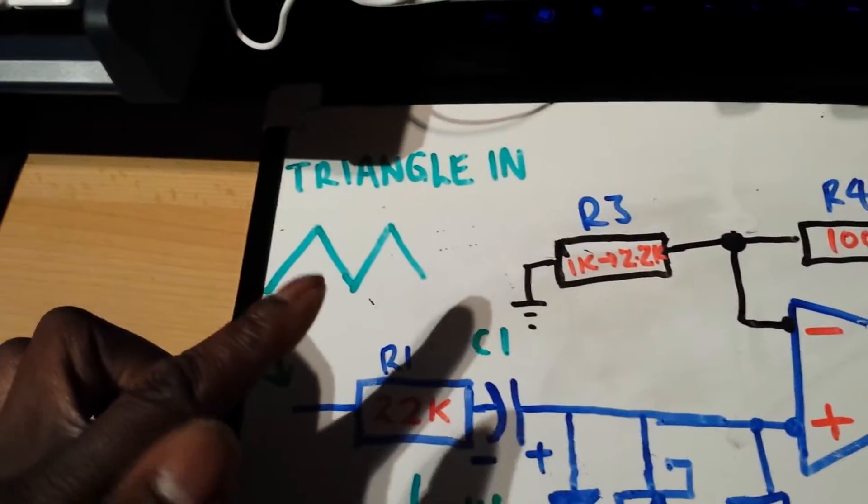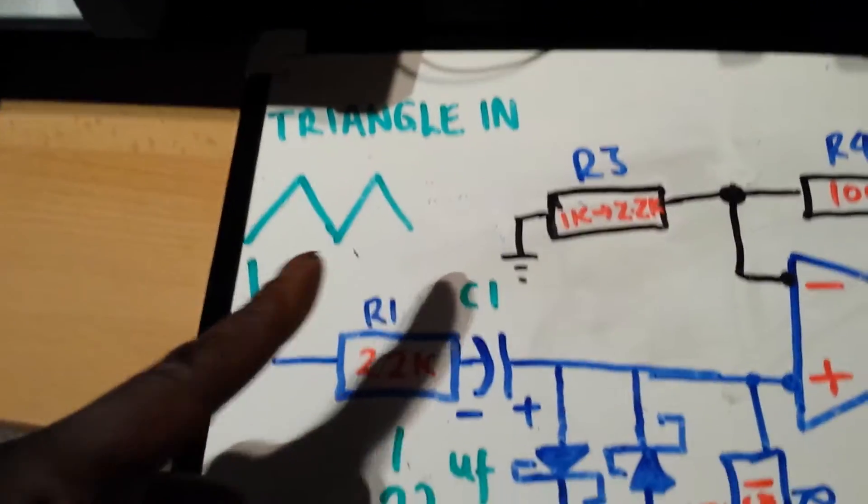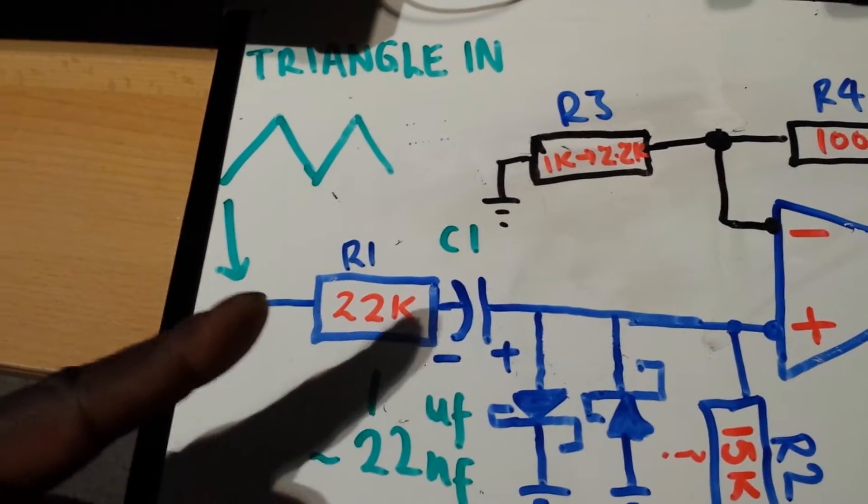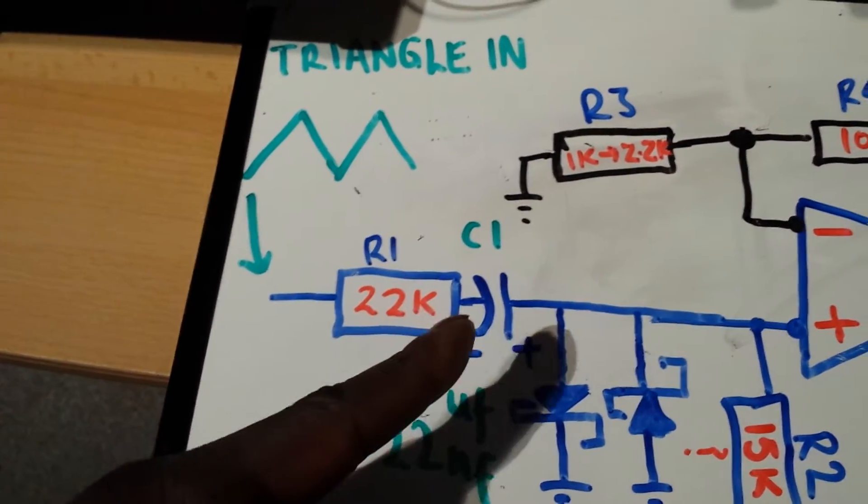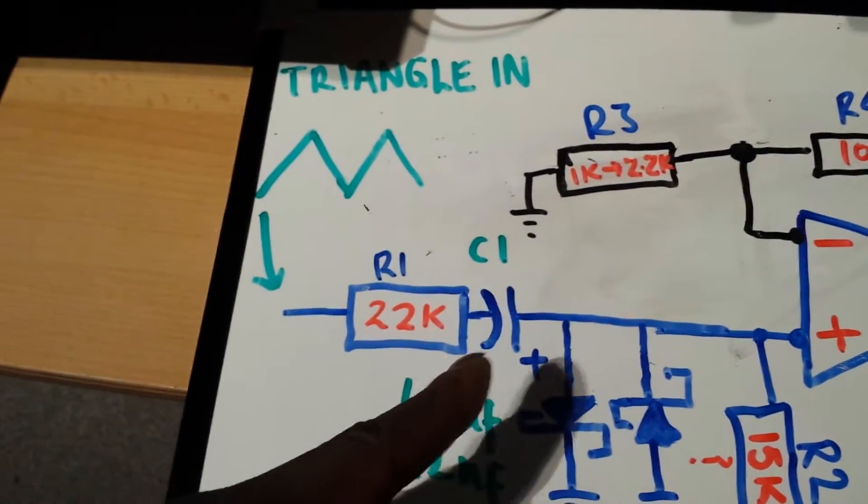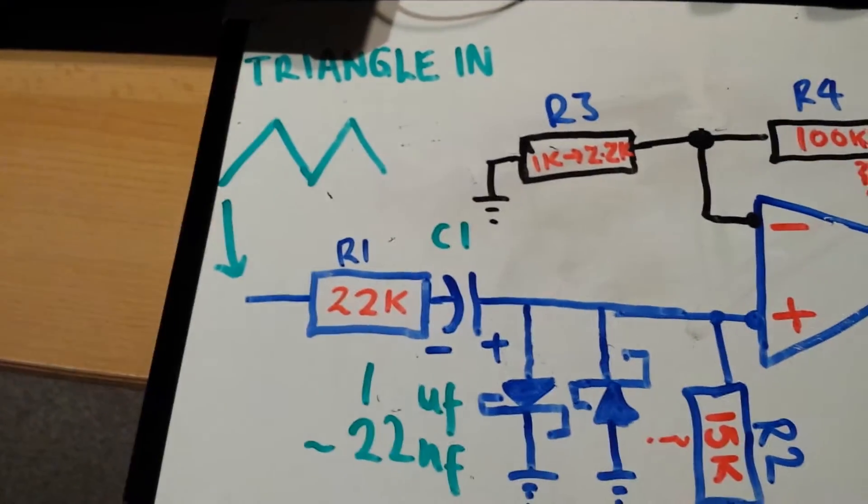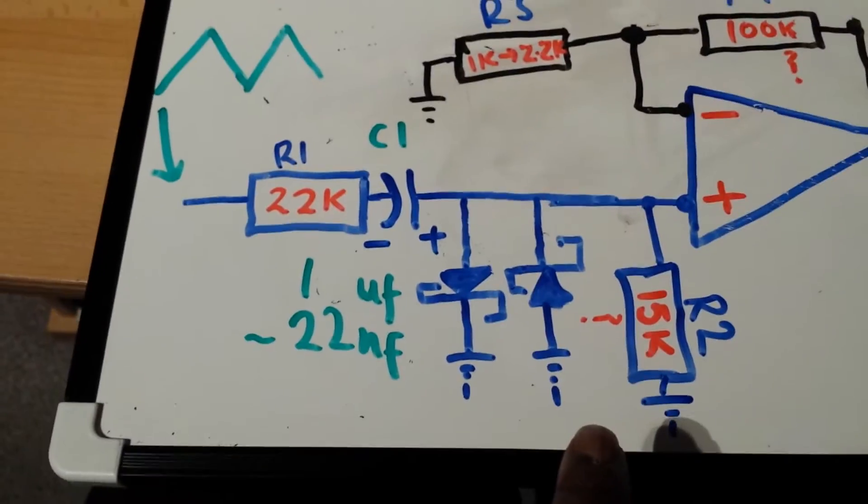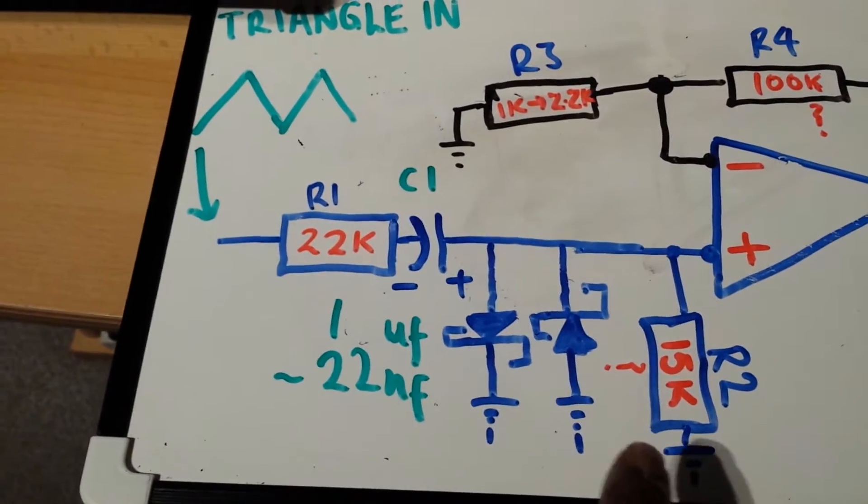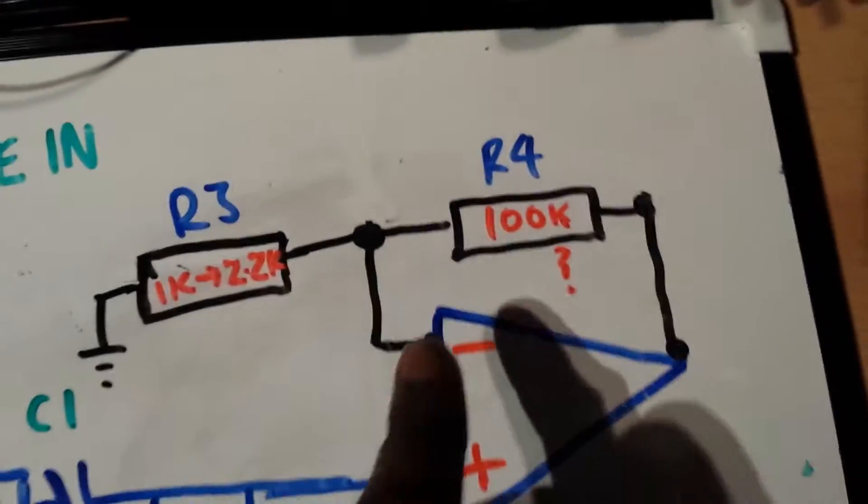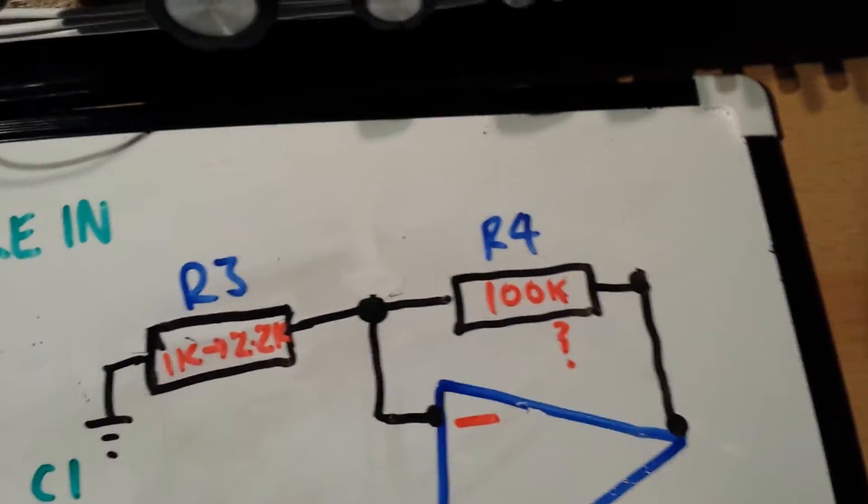So what we need first of all is the main ingredient: a nice symmetrical triangle wave shape. Bring that into the resistor and observe the polarity of the capacitor. We have these connected straight to earth or zero volts and we have this resistor here in the feedback loop.